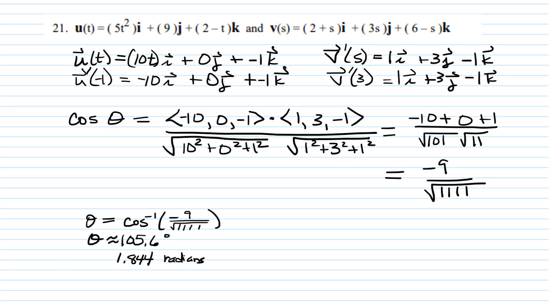So for theta, we get the inverse cosine of that value, which is about 105.6 degrees or 1.844 radians. So we have found the point of intersection and the angle between the two vector valued functions at that point. I hope you found this video helpful. If you did, please give it a thumbs up. That helps other students to find the video.